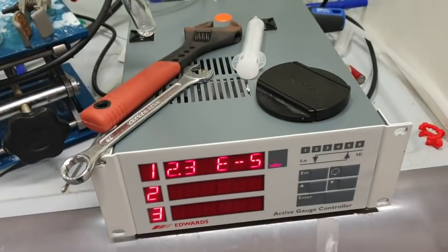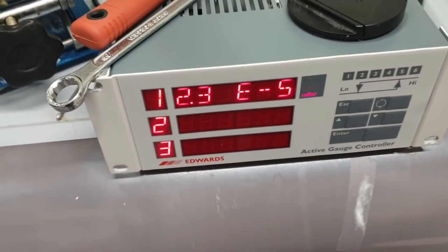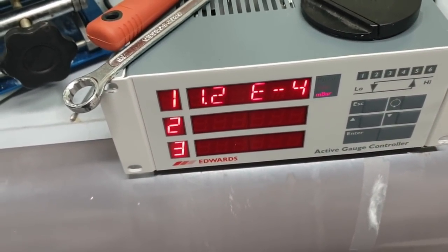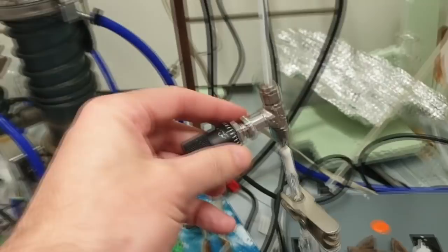And if I let a bit of water in there - so this is my needle valve - you'll see that I can actually control the vapor pressure of water in there really very precisely just by opening and closing this tap in small amounts.